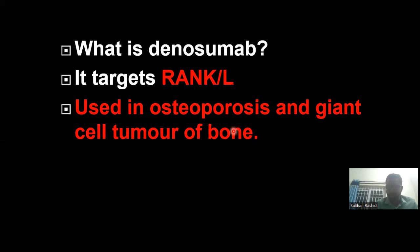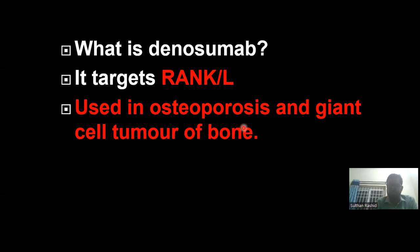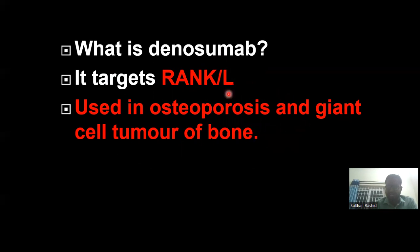Now comes denosumab. It is a monoclonal antibody which acts against RANK-L — receptor activator of nuclear factor kappa-B ligand. By targeting this, it is used in osteoporosis and giant cell tumor of bone.